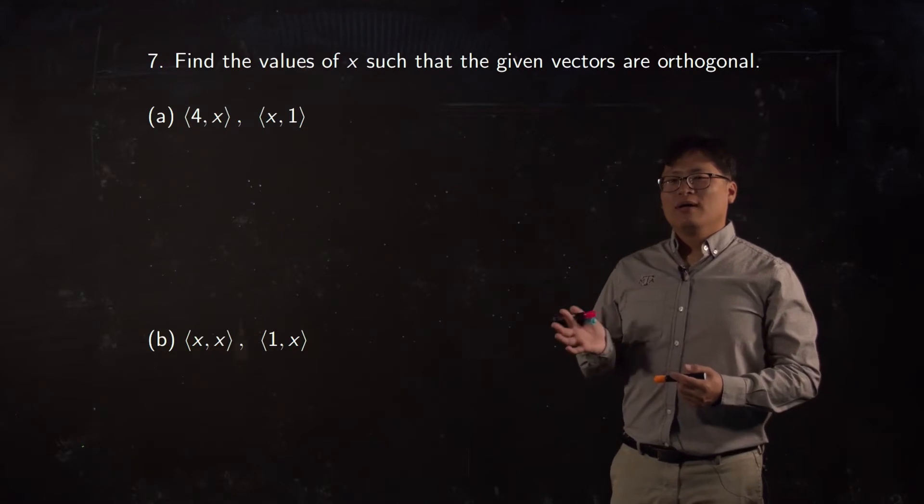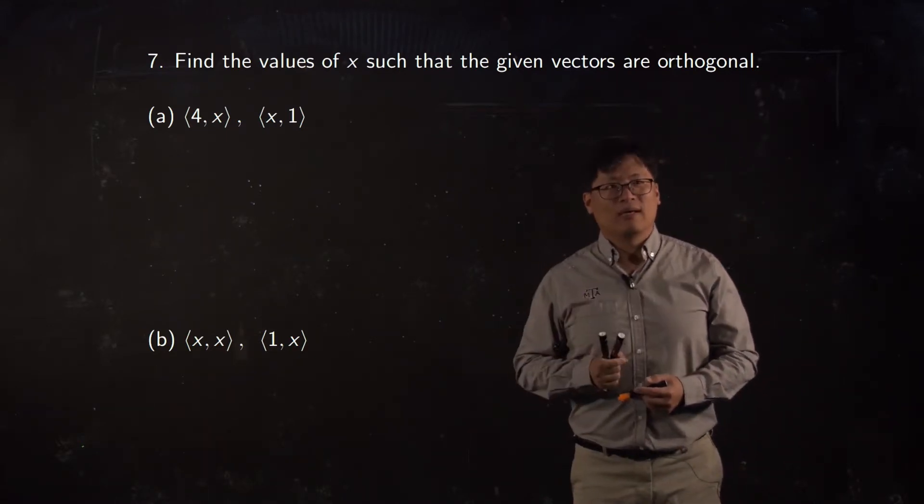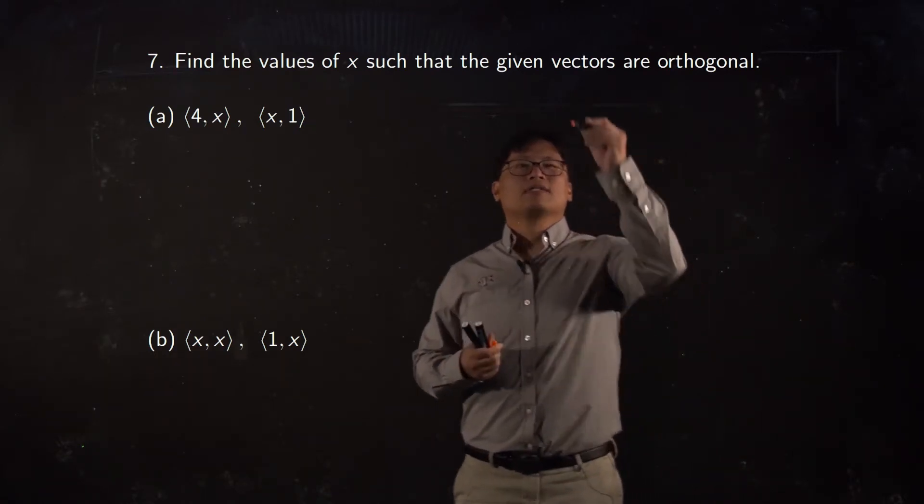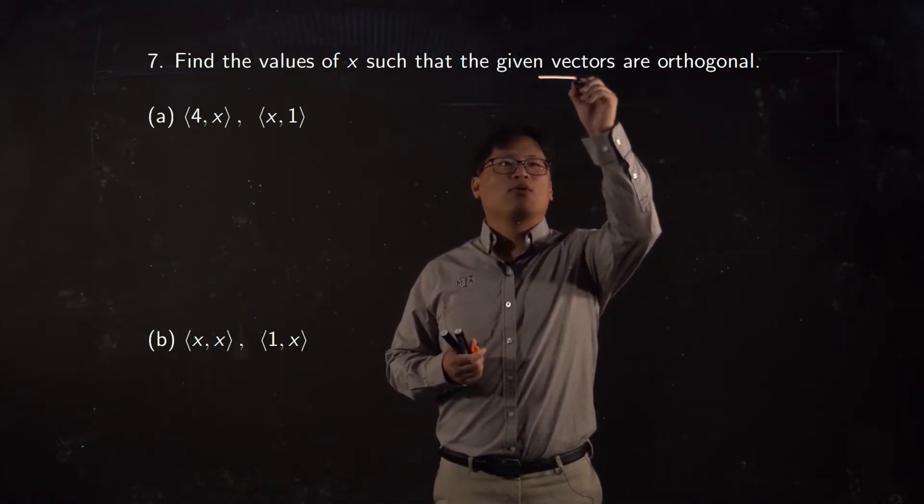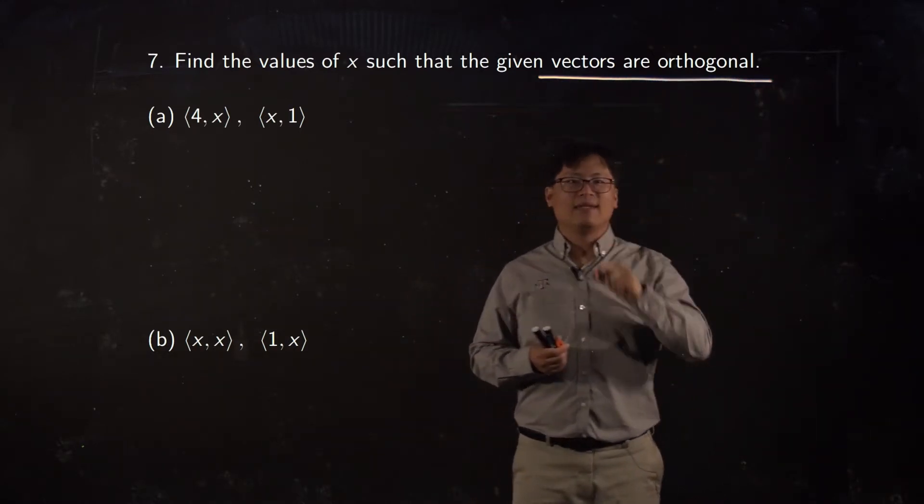Okay, now let's talk about how we can use the dot product for another concept, which is vector orthogonal. The vector orthogonal means the angle between two vectors is 90 degrees.